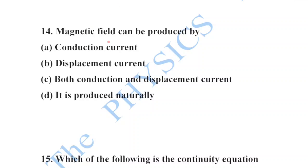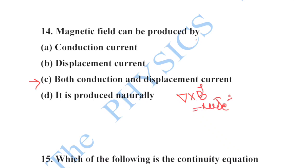Next: magnetic field can be produced by both conduction current and displacement current. This has been proved from Maxwell's fourth equation: ∇×B = μ₀J_c + μ₀ε₀(∂E/∂t), where the second term is the displacement current.